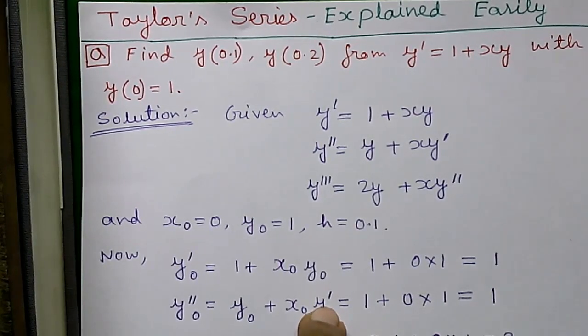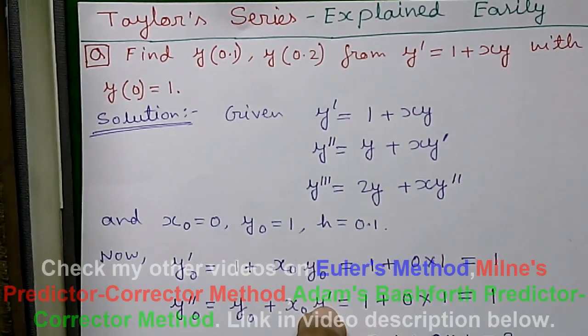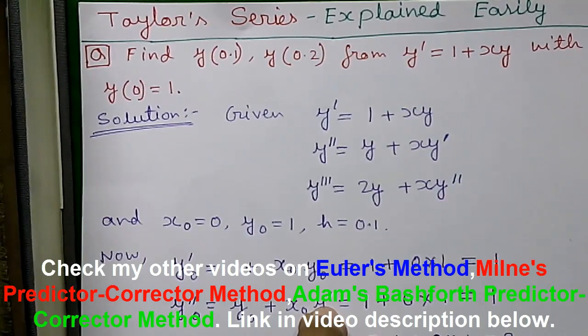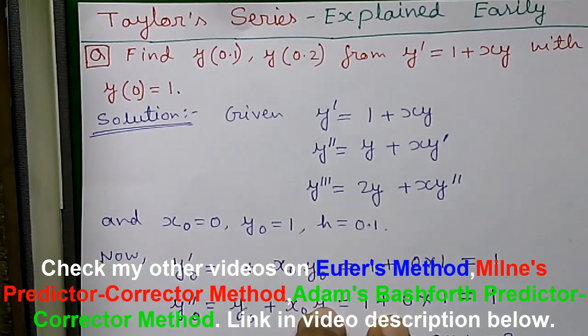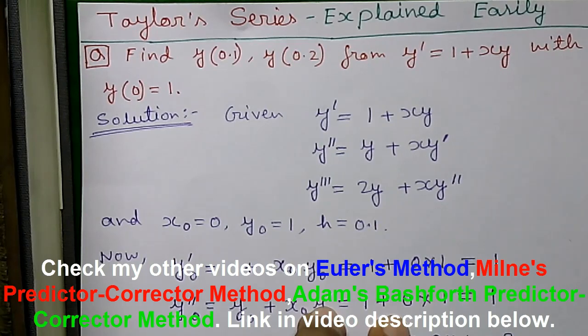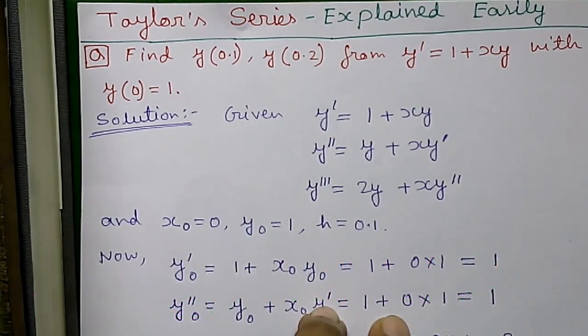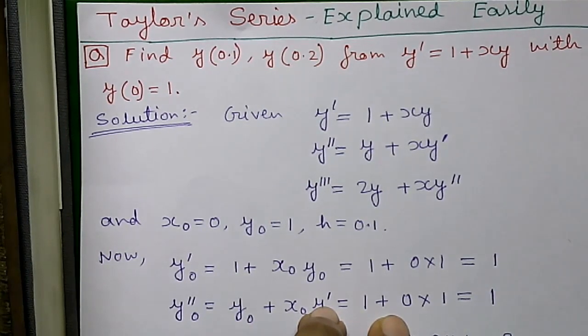There are more than one ways to solve this type of questions. Number one is the Euler's method. Number two is Milne's predictor-corrector method. Number three is Adam-Bashford predictor-corrector method. I have videos on all those three methods. The link to them is given in the video description below. So for now I will tell you how to solve it by Taylor's series method in very easy language.